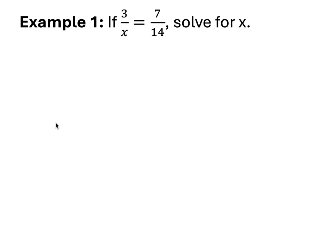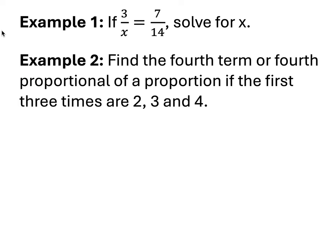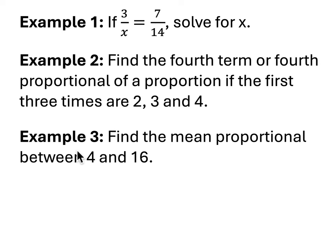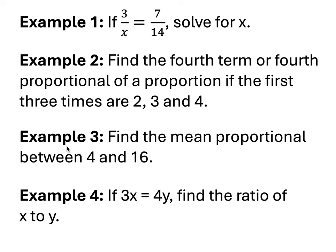Let's try some examples. The first one: solve for x. The second: find the fourth term, or fourth proportional, if the first three terms are 2, 3, and 4. In any proportion, the terms are labeled first, second, third, and fourth. The third example: find the mean proportional. The fourth: find the ratio of x to y. Pause the video and try these, then we'll go through each of them.